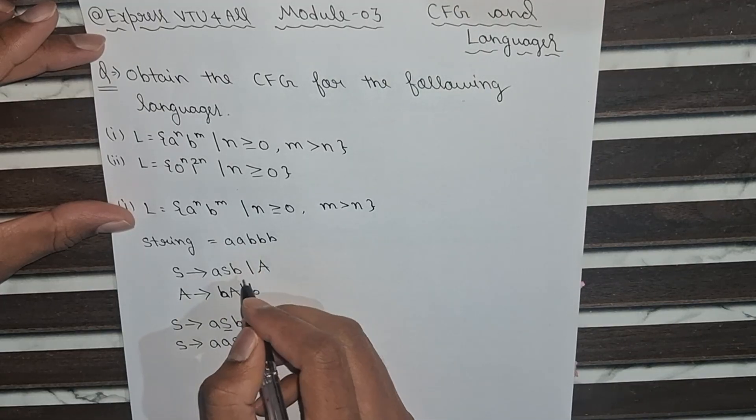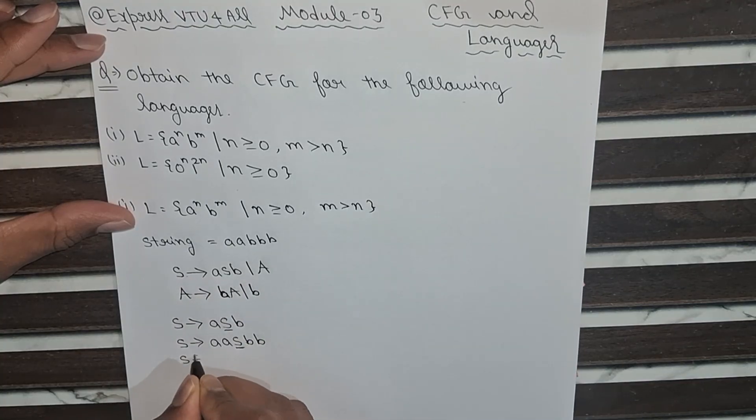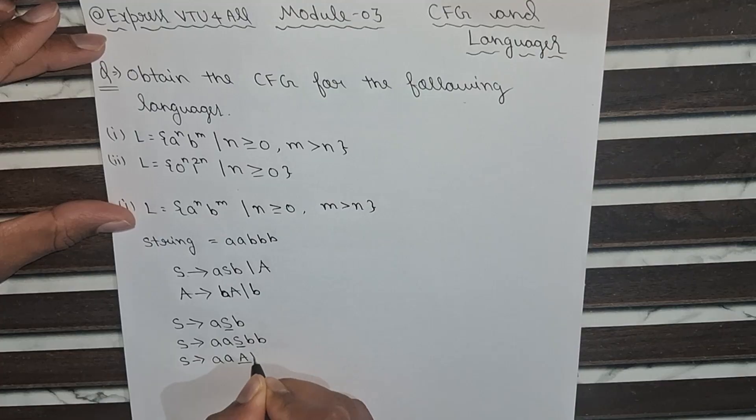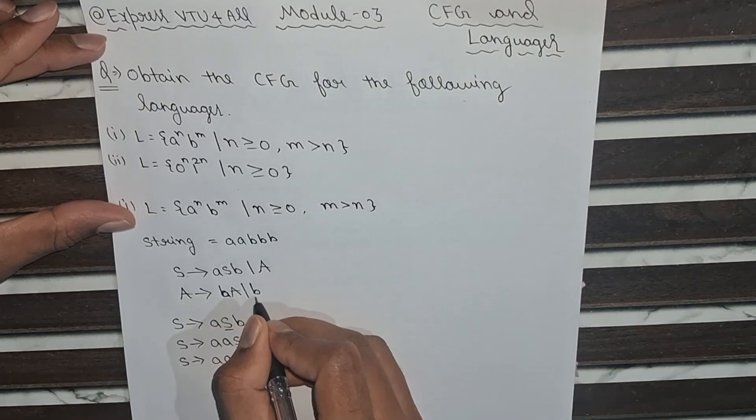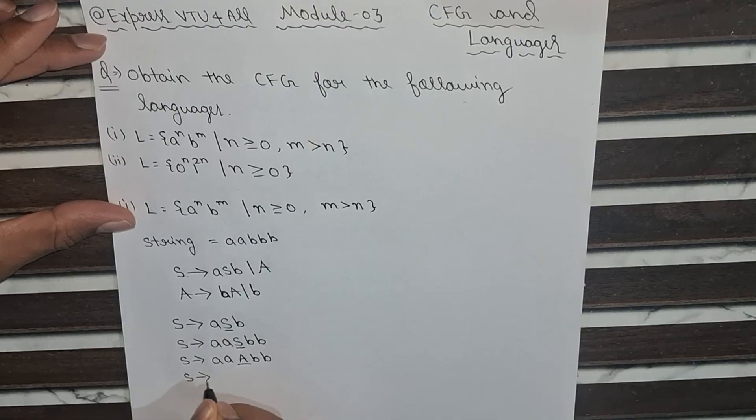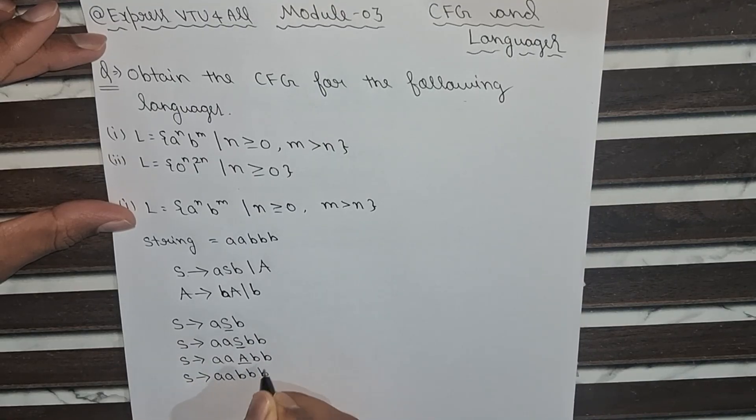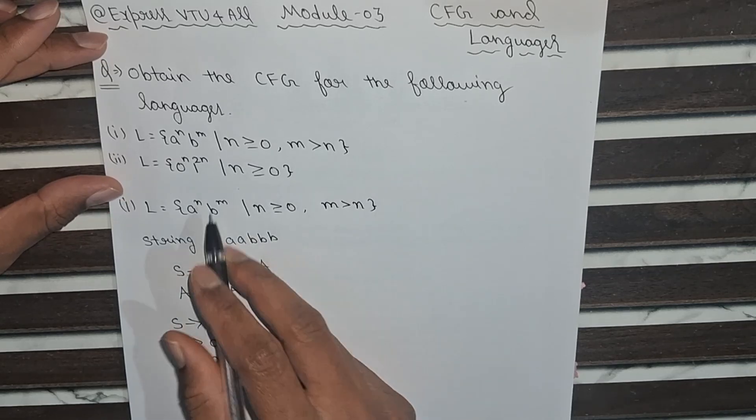Now we want one more b. So we will substitute S as A. So a, a, capital A, b, b. Now we will call this A as b. So a, a, b, b, b. Like this we will trace this string with the help of this CFG.